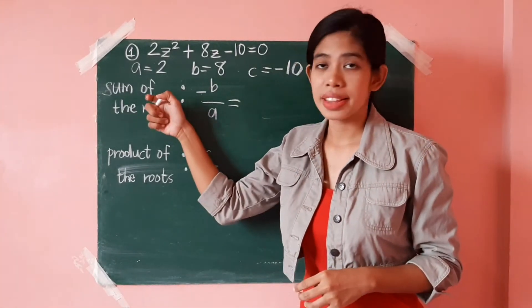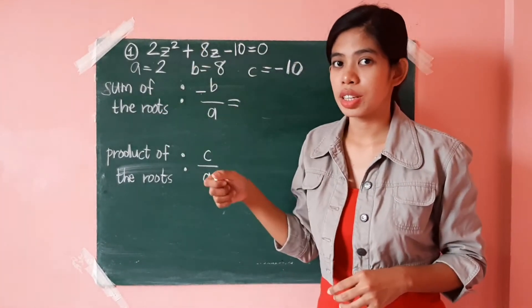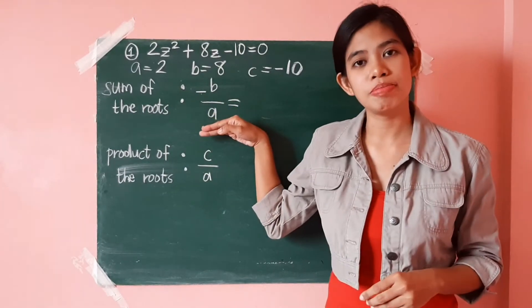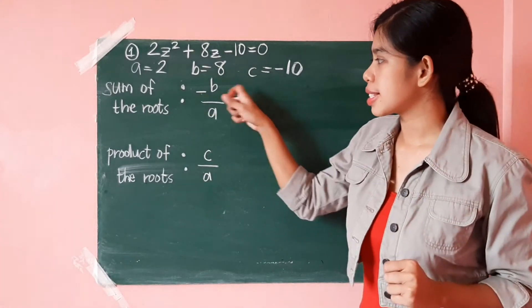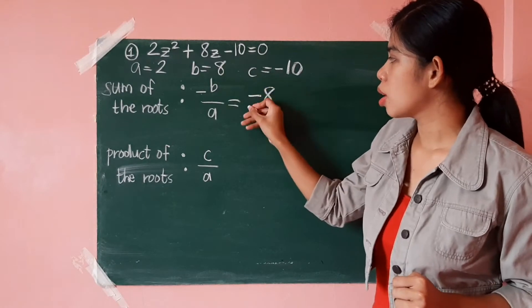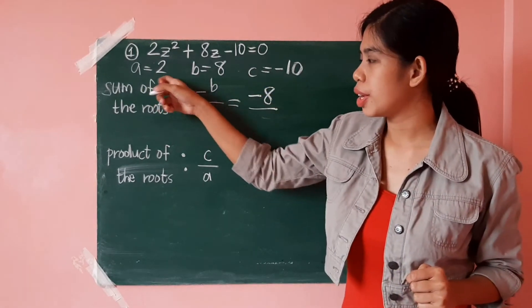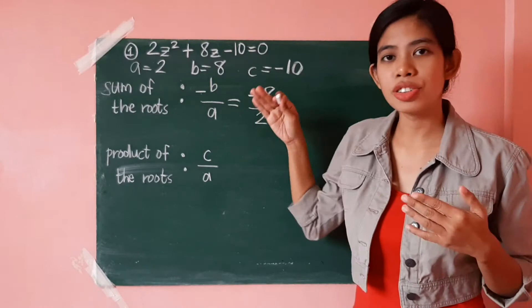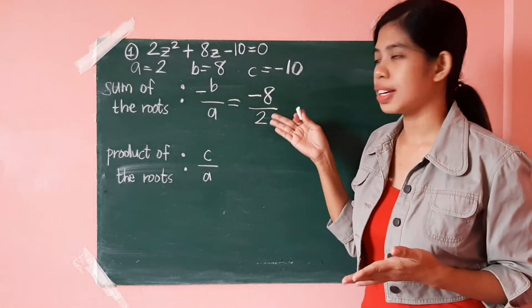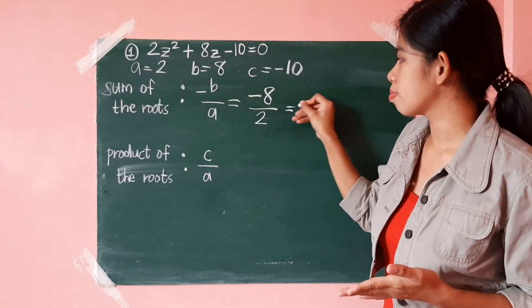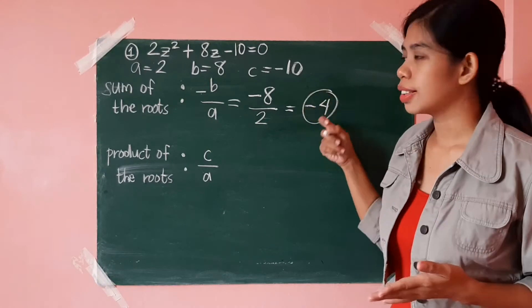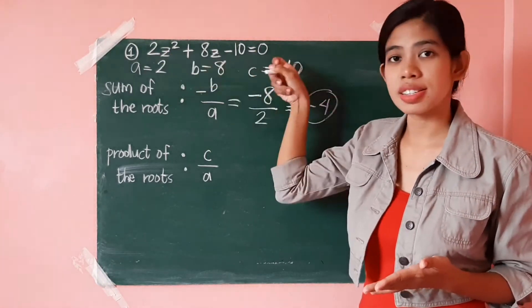In order for us to get the sum of the roots of this quadratic equation, we just have to apply negative b over a. So, that's negative value of b, that's 8, over the value of a, which is 2. And, you just have to divide. Negative 8 divided by 2 is just negative 4. Therefore, this is now the sum of the roots of this quadratic equation.